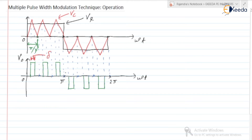The difference between single pulse width modulation and multiple pulse width modulation is: in single pulse width modulation, corresponding to each half cycle we were having only a single pulse, but here we are having multiple pulses — and each pulse has the same width, that is delta.